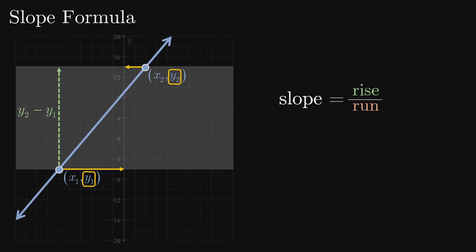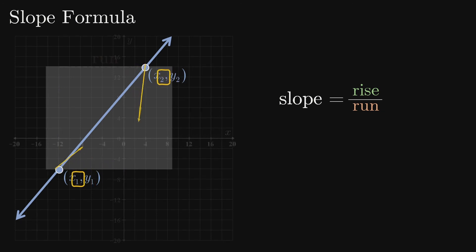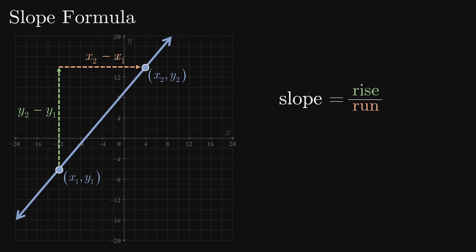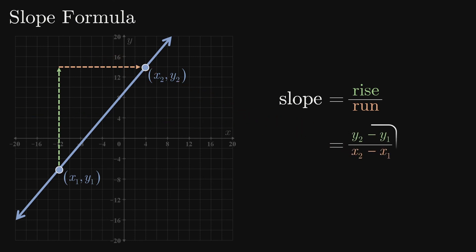Similarly, the run is the difference in the x values, which is x2 minus x1. Therefore, the slope is y2 minus y1 over x2 minus x1, which is the popular slope formula.